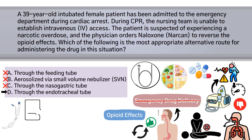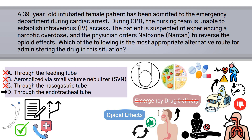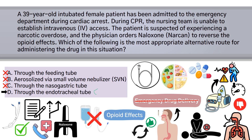Endotracheal tube administration is an accepted alternative route for specific emergency medications, including naloxone, when IV access is not available. By breaking down the answer choices, we can easily determine that the correct answer is D — through the endotracheal tube.